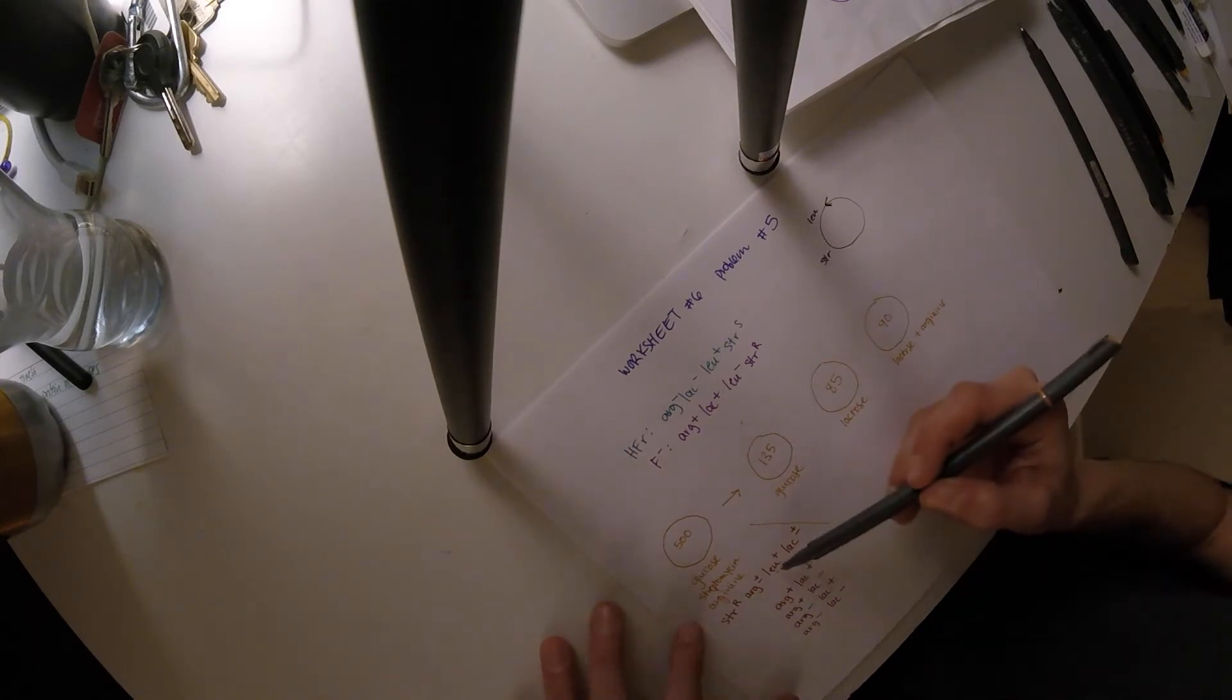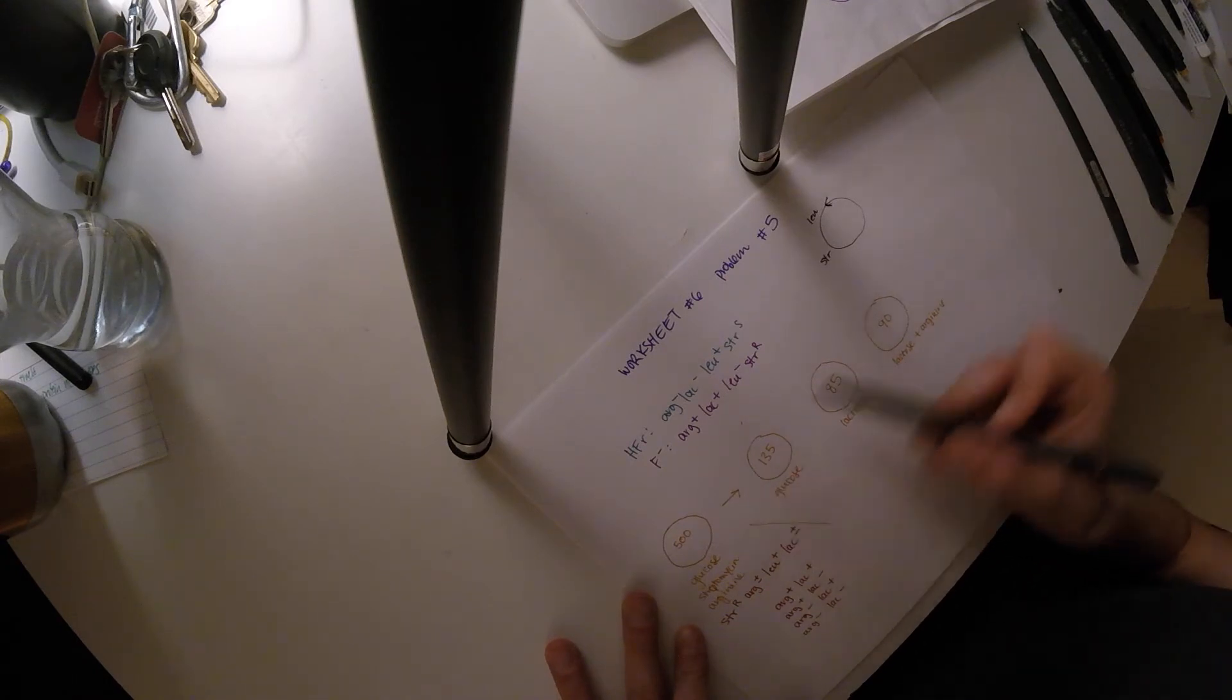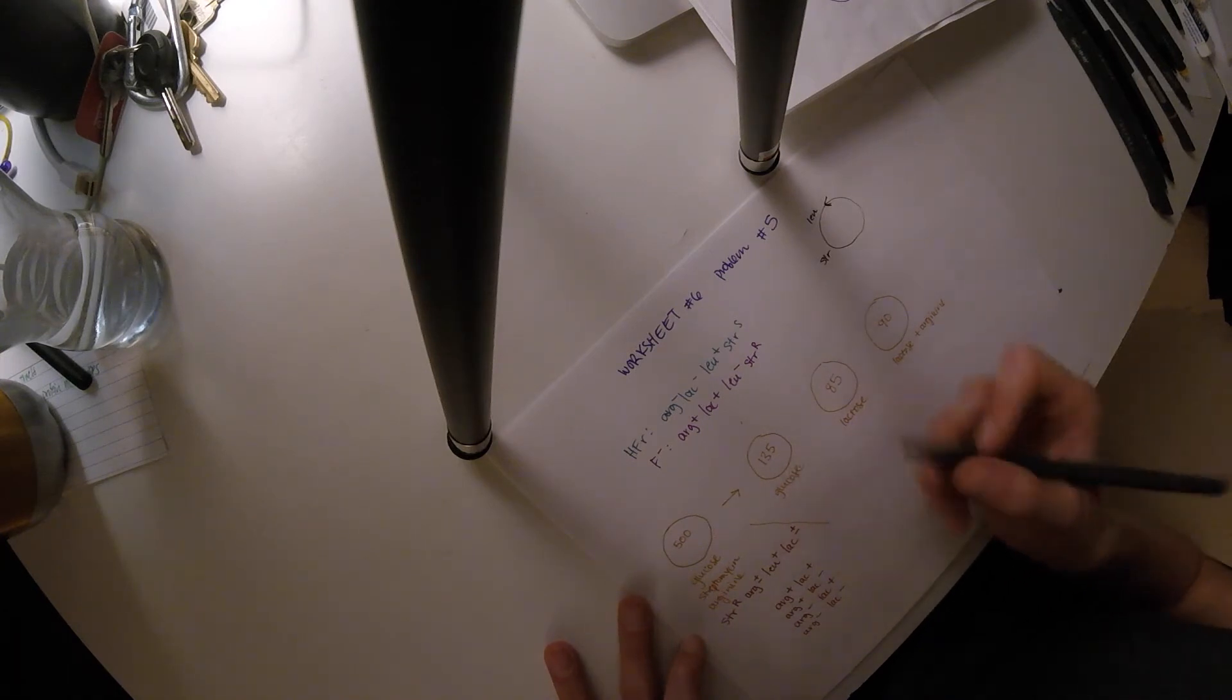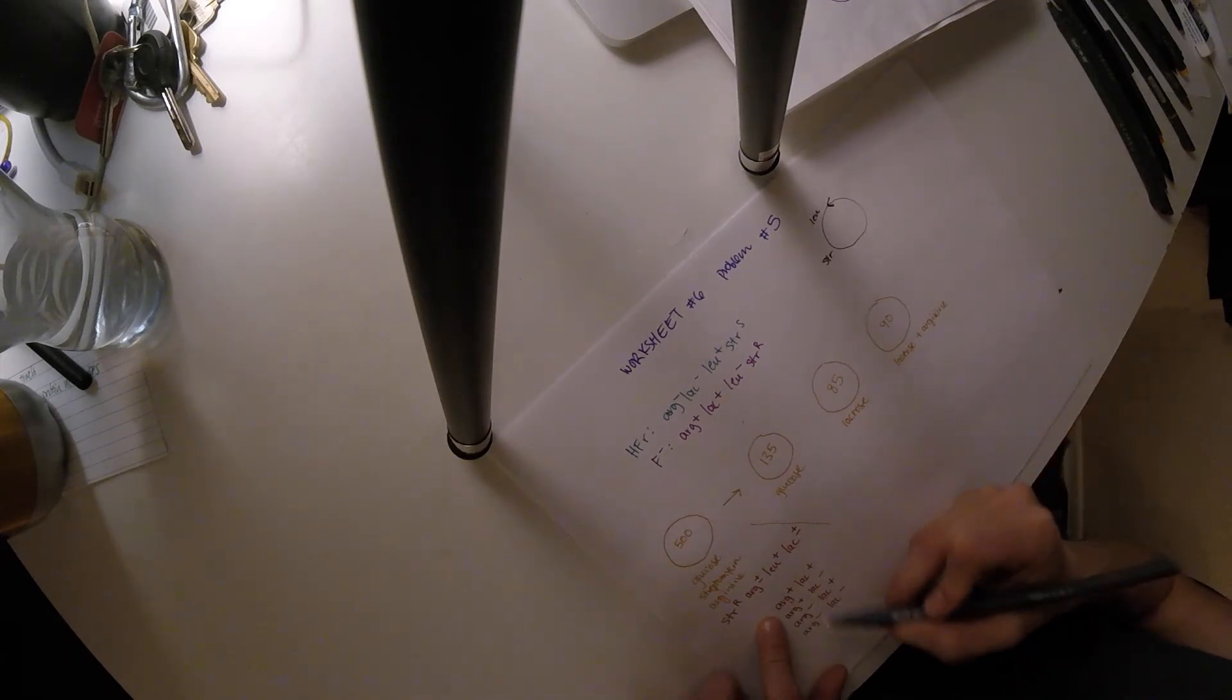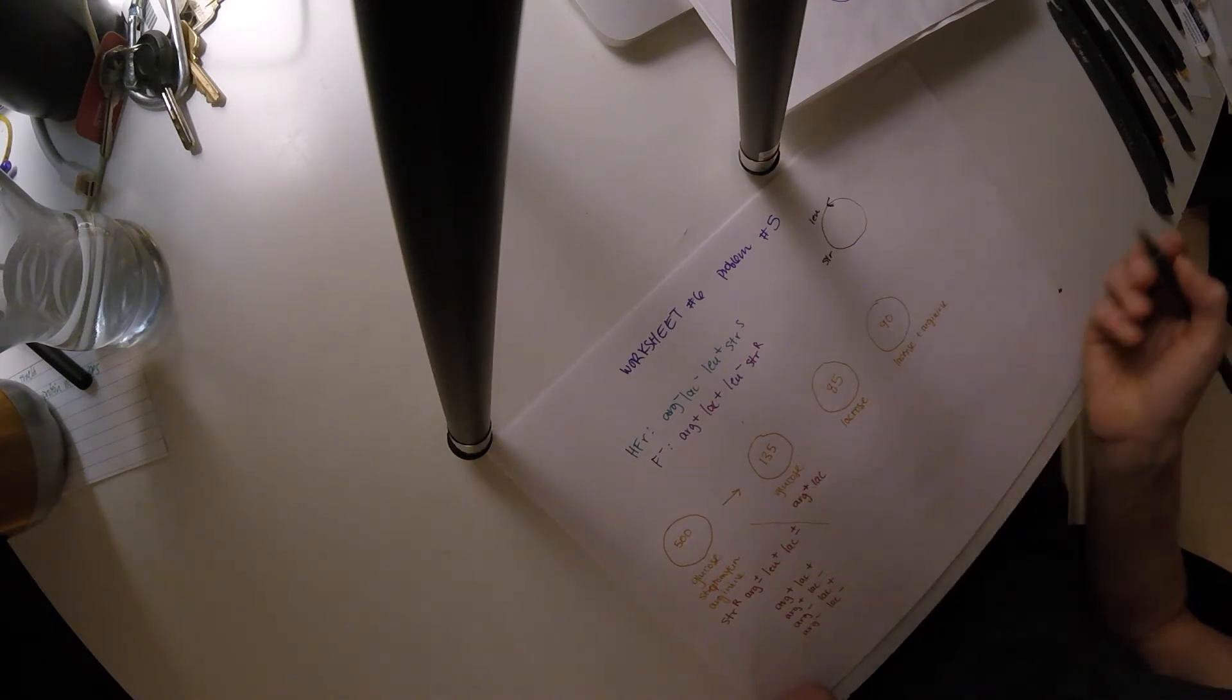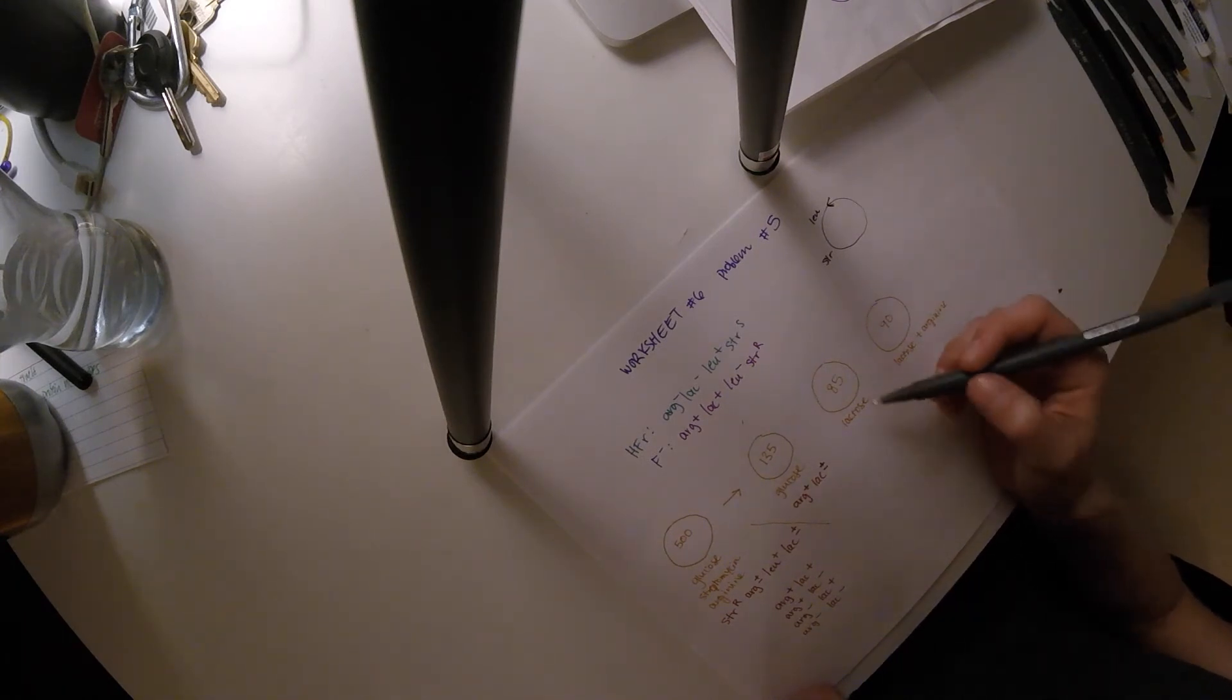So similar to what we just did here, these 500 are replica plated, so that means of the 500, 135 were able to survive on this plate, of the 500, 85 here, and then same thing for the 90 here. So we need to figure out what's going on with respect to the genotype based on how many are on here. So here, this 135, if you were able to live with only glucose, and we're looking at what happens with arginine and lactose, that means you must have been able to make arginine because you weren't provided it, so you must be arg plus. But this doesn't tell us anything about lactose. They can be plus or minus. They use glucose as a sugar, so we're going to say plus minus.